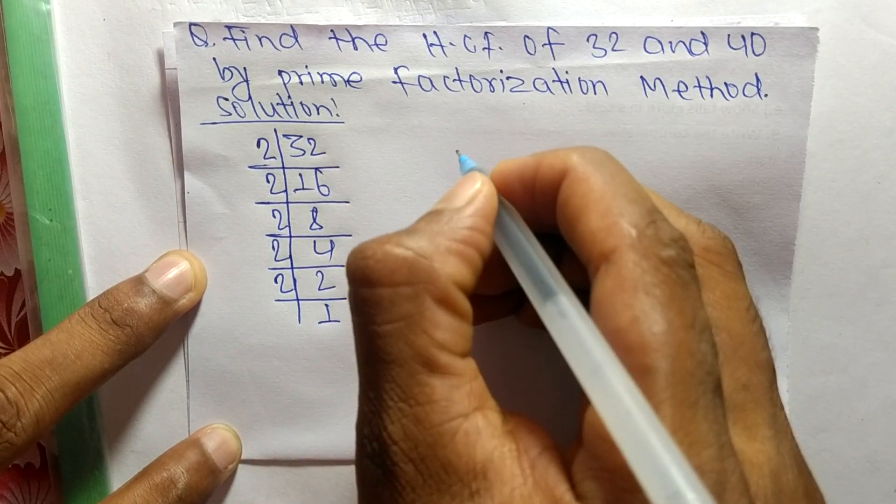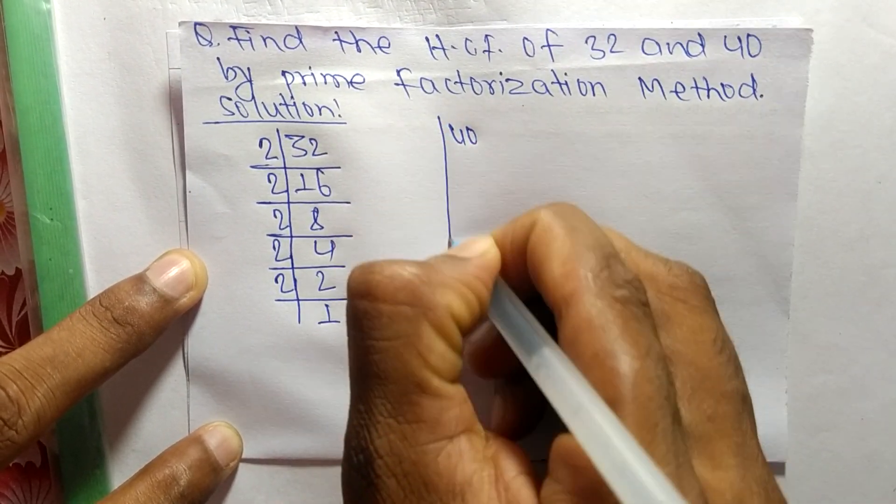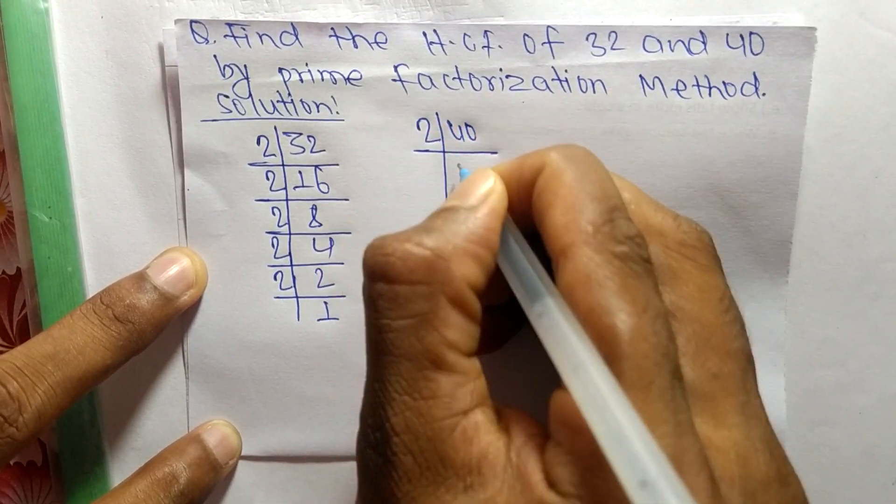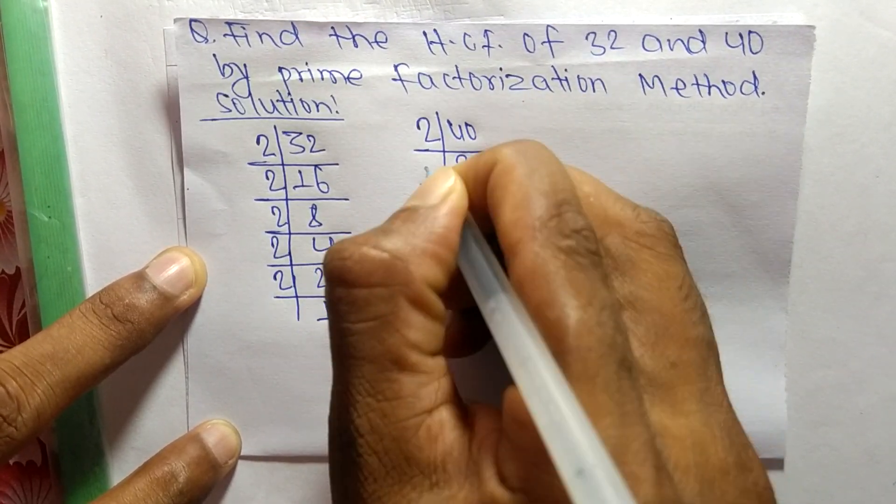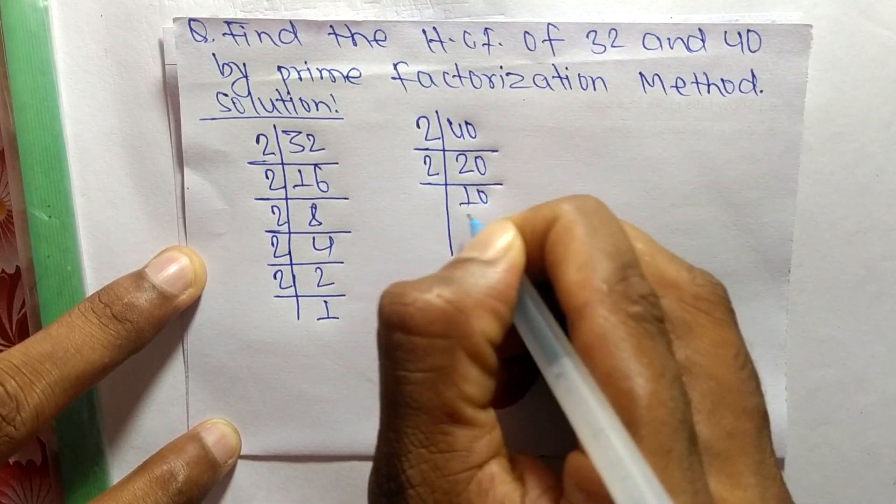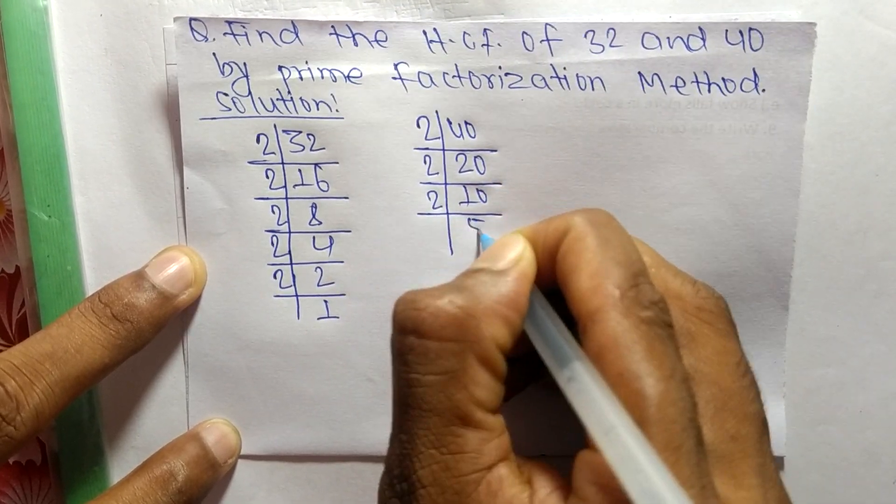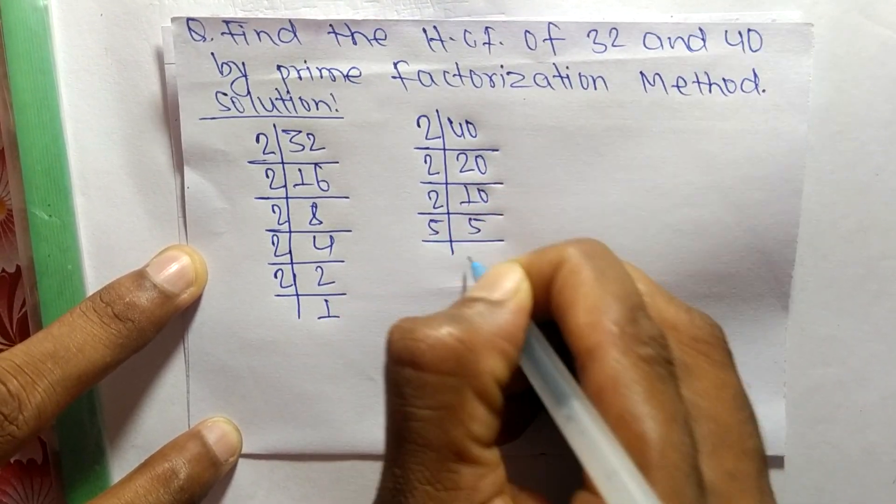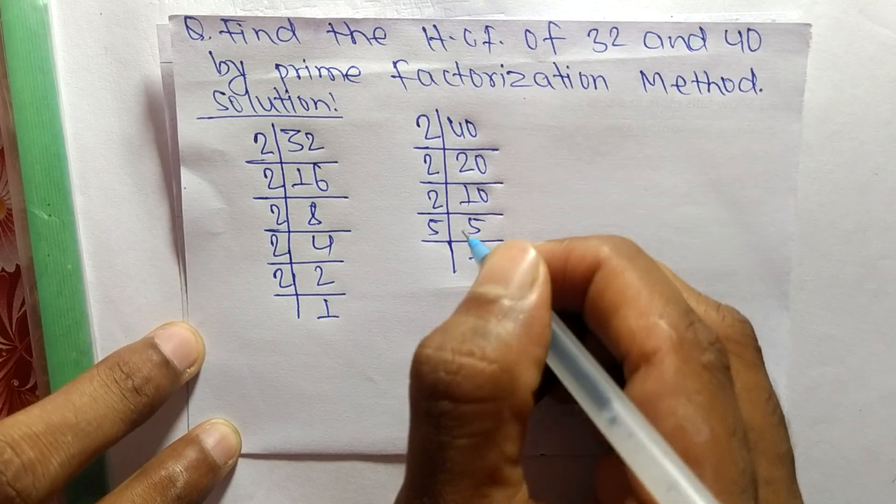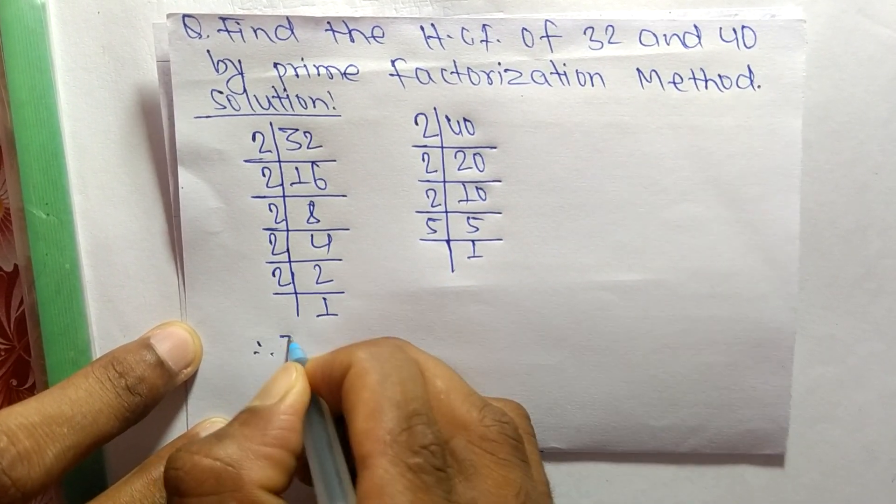The prime factors of 40 are: 2 times 20 equals 40, 2 times 10 equals 20, 2 times 5 equals 10, and 5 times 1 equals 5.